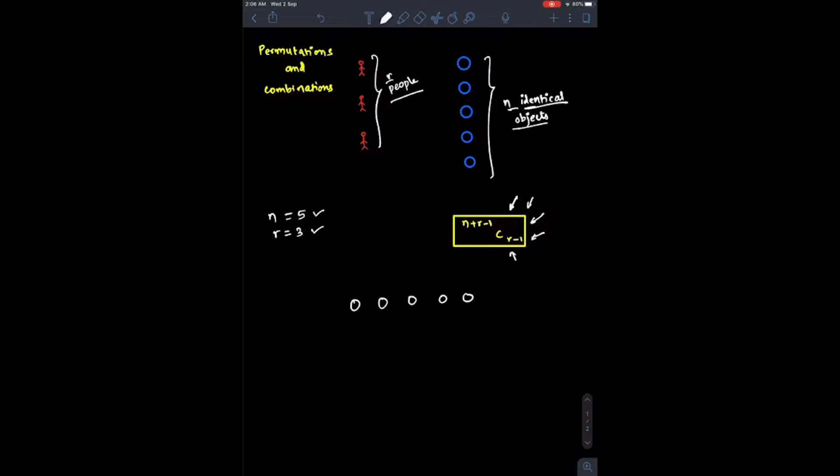Let's check n is equal to 5 and r is equal to 3. So I'm trying to distribute five identical objects among three people. The way I'm going to do this is to introduce two sticks into the sequence. So for example, since I want to distribute five objects among three people, I will be introducing two sticks here.